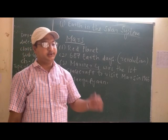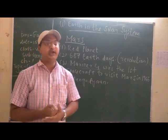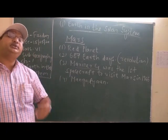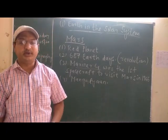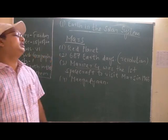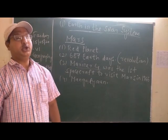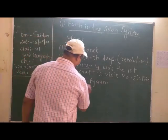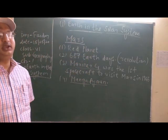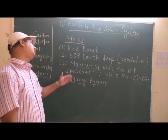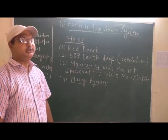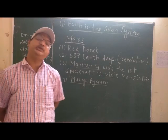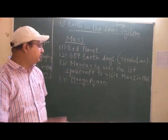Mars Pathfinder was successfully landed on Mars on 4th July 1997. India's Space Research Organization — ISRO — also sent a spacecraft. The name stands for the name of the planet and YAN stands for the vehicle. It was launched on 5th November 2013 by ISRO. It is India's first interplanetary mission, and ISRO became the fourth agency in the world to send a special mission to Mars.